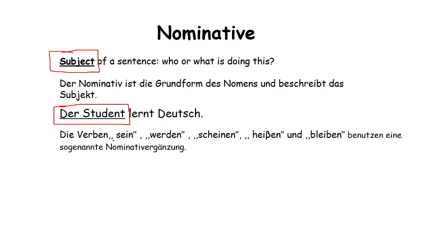So, if the sentence has the verbs sein, werden, scheinen, heißen, or bleiben, then the whole sentence is nominative.